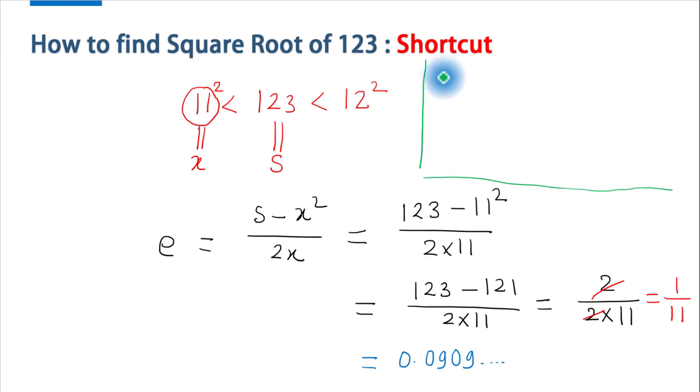Now you can approximate square root of S by the quantity X plus e. Here X is equal to 11 and e is equal to 0.09 and so on.